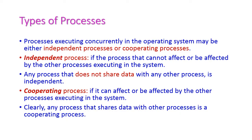First, let us see the types of processes. In an operating system, more number of processes can execute simultaneously. The processes are either independent processes or cooperating processes. An independent process is one that cannot affect other processes or be affected by other processes.